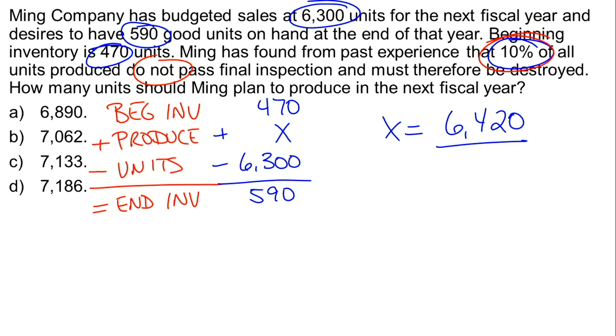What that means is we need to have 6,420 units pass final inspection, and of those units that are produced, only 90% of them are going to pass final inspection. So X becomes the number of units that ultimately needs to be produced so that we end up with 6,420 good units. We do the math and what we get is that X is equal to 7,133. Fortunately for us, 7,133 is actually a choice.